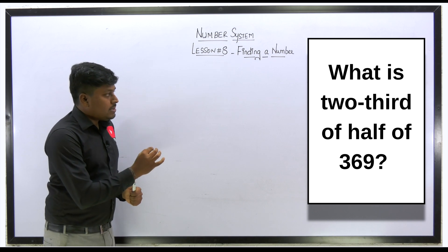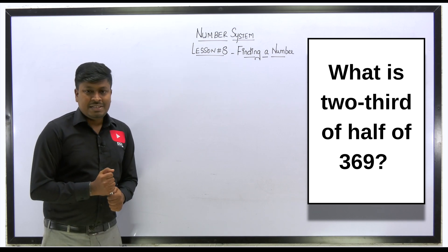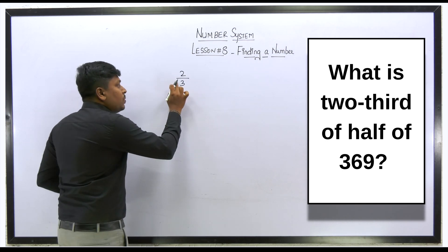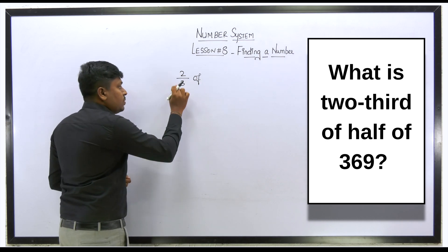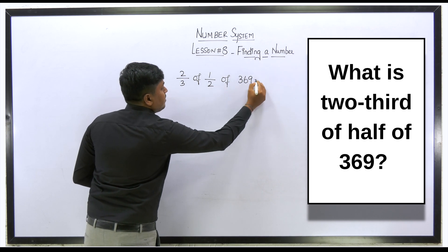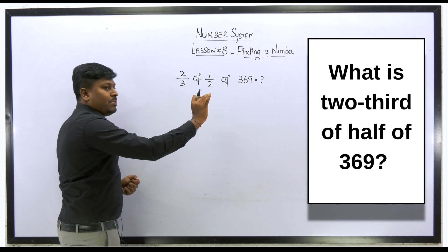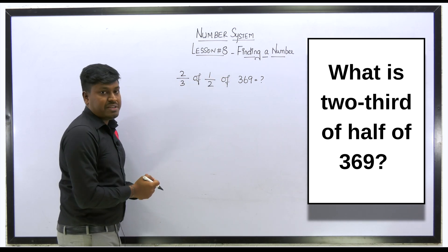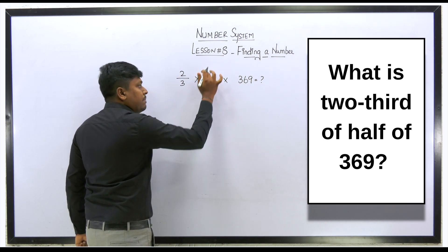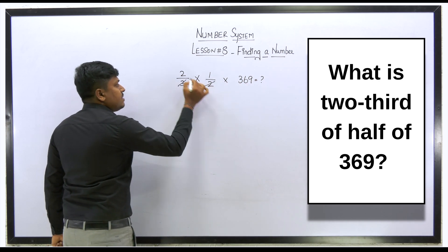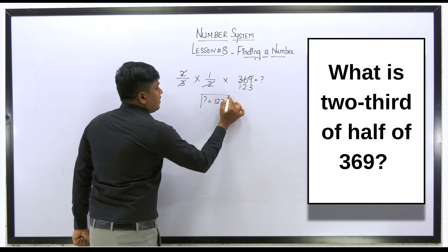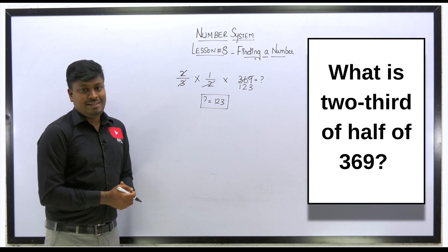Question 1: What is two-thirds of half of 369? Two-third means 2 divided by 3, and 'of' means multiplication. So the equation is (2/3) × (1/2) × 369. We can cancel the 2s, giving (1/3) × 369. Then 3 × 3 = 9, 3 × 2 = 6, 3 × 1 = 3, so the answer is 123. You just need to understand the question, frame the equation, and solve.